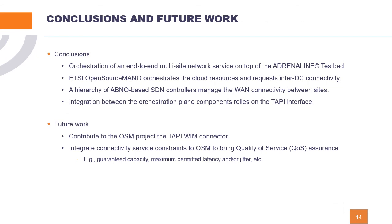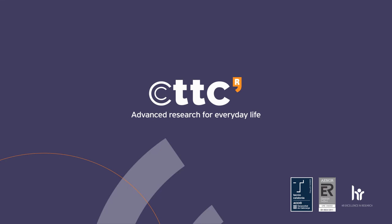We showcased orchestration of an end-to-end multi-site network service on top of the Adrenaline testbed. The ETSI Open Source MANO orchestrates cloud resources and requests inter-datacenter connectivity to the hierarchy of APNO-based SDN controllers in charge of WAN connectivity. The interaction between orchestration plane components relies on the Transport API interface. Our future work includes contributing the Transport WIM connector to the OSM project and extending it with additional service constraints to bring quality-of-service assurance to OSM. This concludes the demonstration — thank you very much for your attention.